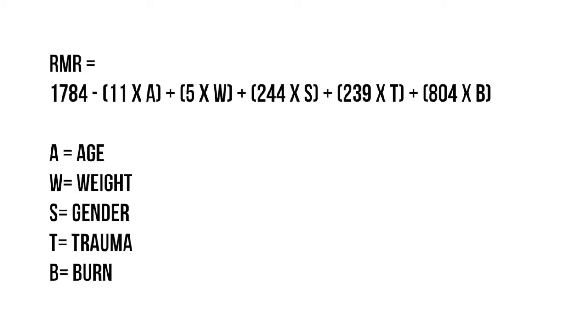The next equation is the Ireton-Jones equation. The Ireton-Jones equation was one of the first predictive equations used that really did not involve a stress factor. If you do not know what a stress factor is, go back to last week's video to learn more. In this equation: A stands for age in years, W stands for weight in kilograms, S stands for sex or gender — male gets a value of one, female gets a value of zero — T is the presence or absence of trauma, where trauma present equals one and absent equals zero, and B is a diagnosis of a burn, where present equals one and absent equals zero.